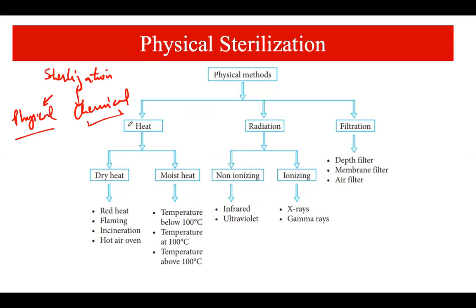Under the physical methods, there are three subtypes: heat, radiation, and filtration. Heat means we are using heat for the removal of microorganisms. Radiation means we are using radiations. And filtration means we are using some sort of filtration to remove microorganisms from a specific solution or substance.